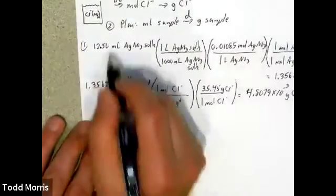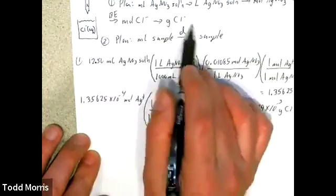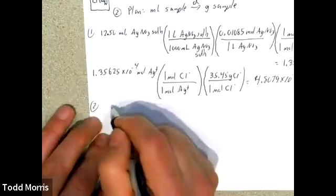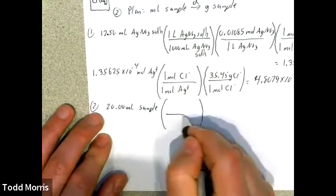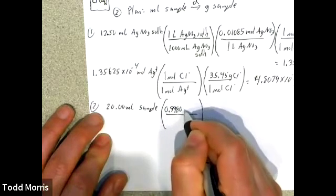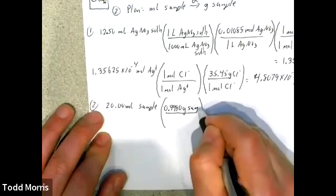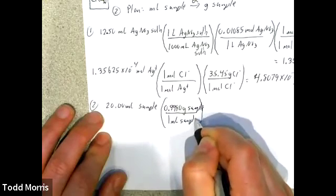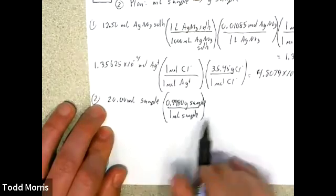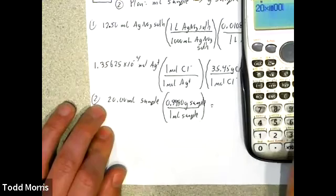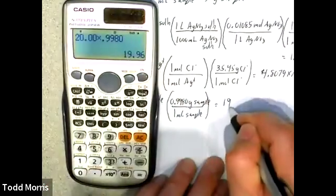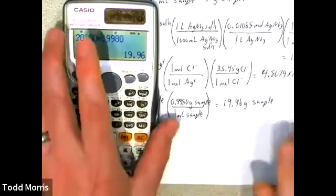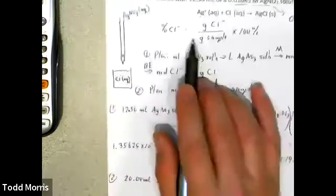To find the denominator, that's Part 2, where I convert from volume of sample to grams of sample using density as my conversion factor. We have our 20-milliliter sample, and the density tells us that one milliliter of the sample has a mass of 0.9980 grams. So multiplying volume by density: 20.00 times 0.9980 tells me that 20 milliliters of the sample has a mass of about 19.96 grams — that is the denominator.